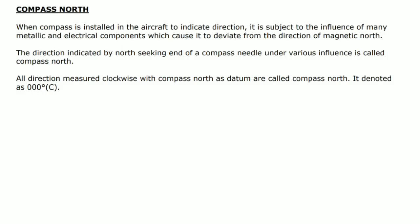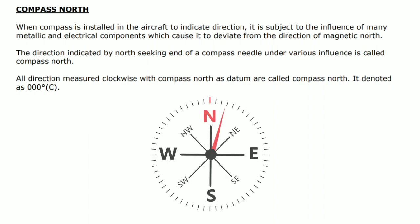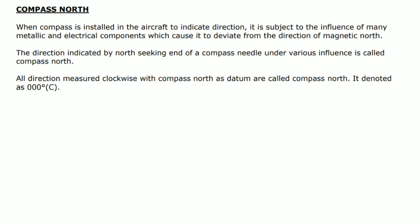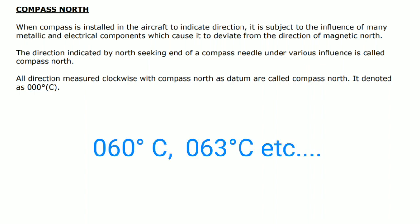When a compass is installed in the aircraft to indicate direction, it is subject to the influence of many metallic and electrical components, which cause it to deviate from the direction of magnetic north. The direction indicated by the north-seeking end of a compass needle under various influences is called compass north. All directions measured clockwise with compass north as a datum are called compass directions, denoted as 000°(C) — C is for compass.